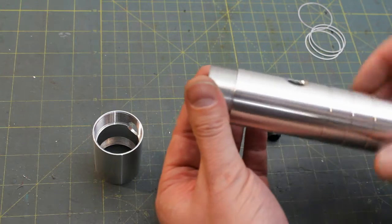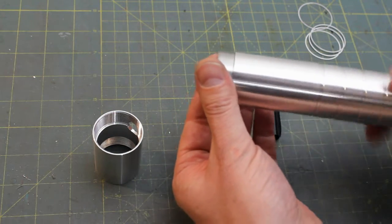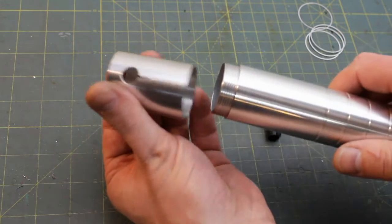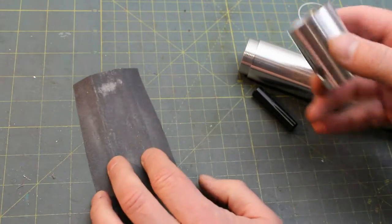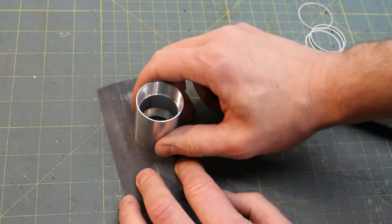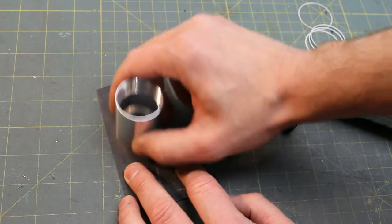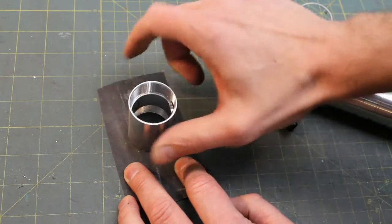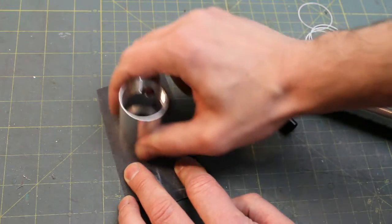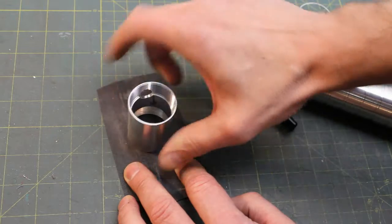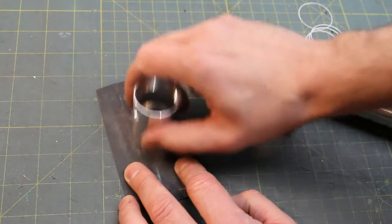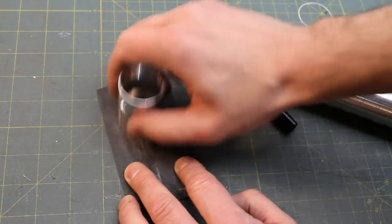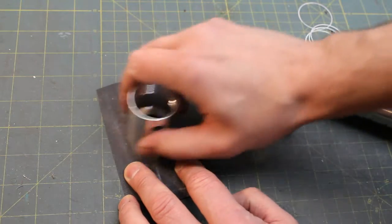I'm going to take this surface here and take some 220 grit sandpaper. You can use different stuff. I'm going to put it flat on the table and hold it down, and I'm just going to do circular motions to make it even. I like to rotate it a few times, doing circular motions. I'm not going to do too much.